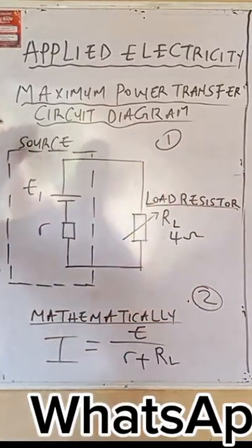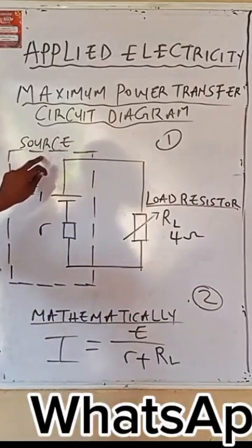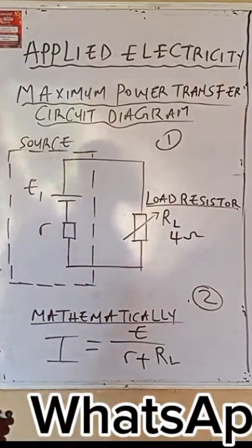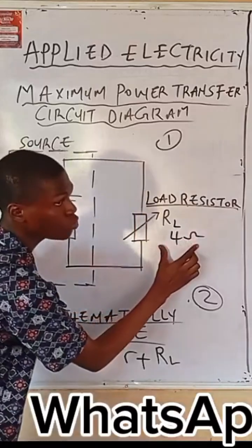The question asks: find the maximum power transfer for this source. This means the value of R, the resistor value that will give you maximum power for your source, is equal to the value of your load resistor.